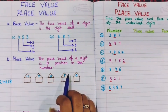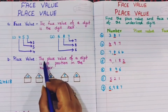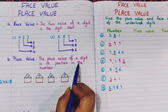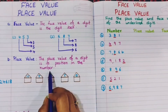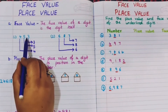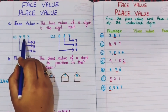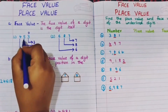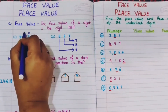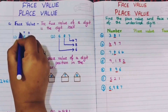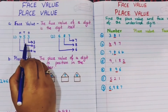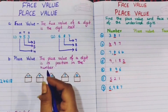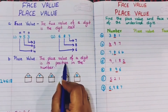Now let's move towards place value. The place value of a digit is its position in the number. Here we have the number 453 — each digit is present in their particular house: 3 is in the 1's house, 5 is in the 10's house, and 4 is in the 100's house. They cannot change their houses.